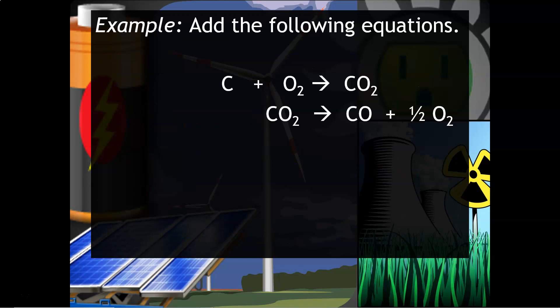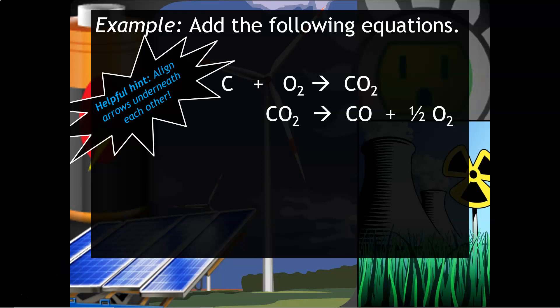Here's an example. Add the following equations. It's really helpful if you align the arrows underneath each other similar to if you were solving an algebra equation. We are going to first notice that the CO2s will cancel because they are on opposite sides of the equations. The half O2 on the right will leave a half O2 on the left because there was originally one of them. Rewrite all the substances that remain.